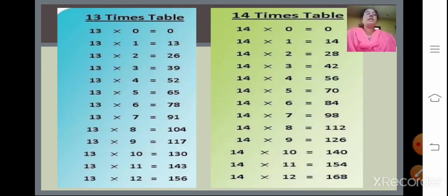Table of 13: 13 zeros are 0, 13 ones are 13, 13 twos are 26, 13 threes are 39, 13 fours are 52, 13 fives are 65, 13 sixes are 78, 13 sevens are 91, 13 eights are 104, 13 nines are 117, 13 tens are 130, 13 elevens are 143, and 13 twelves are 156.